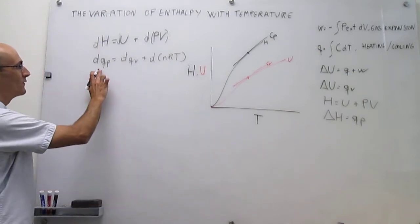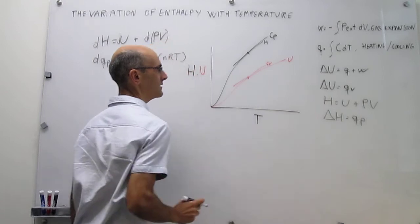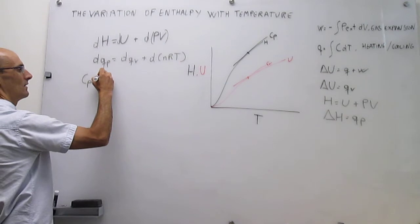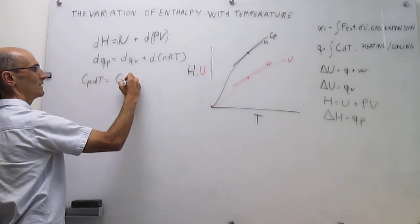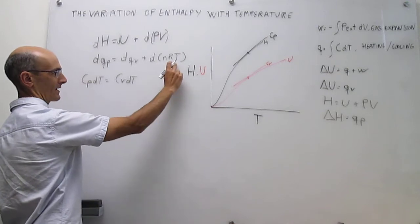So forging along here, q sub p, now we can use this expression for the heat, and then find that that is simply going to be c sub p differential of T. Here we have c sub v differential of T. And here we just have that expression.